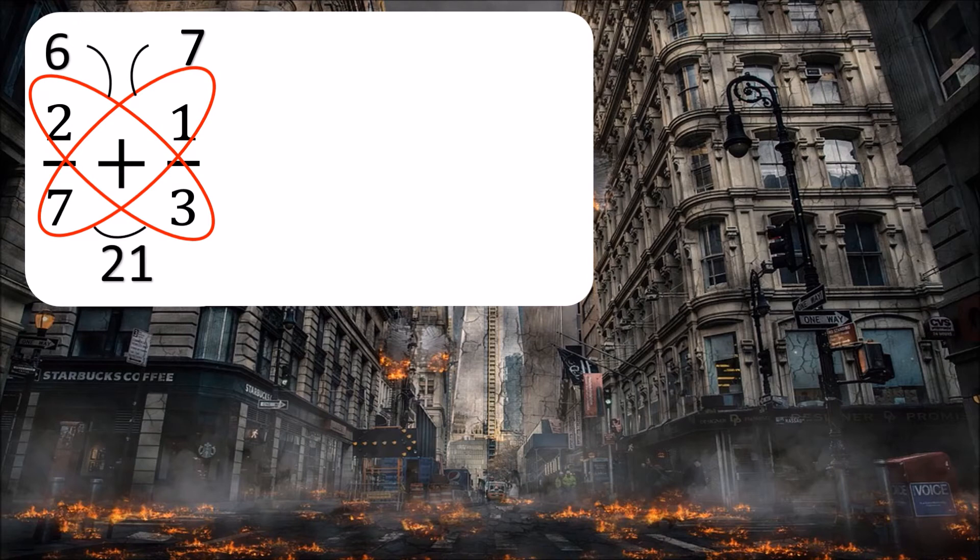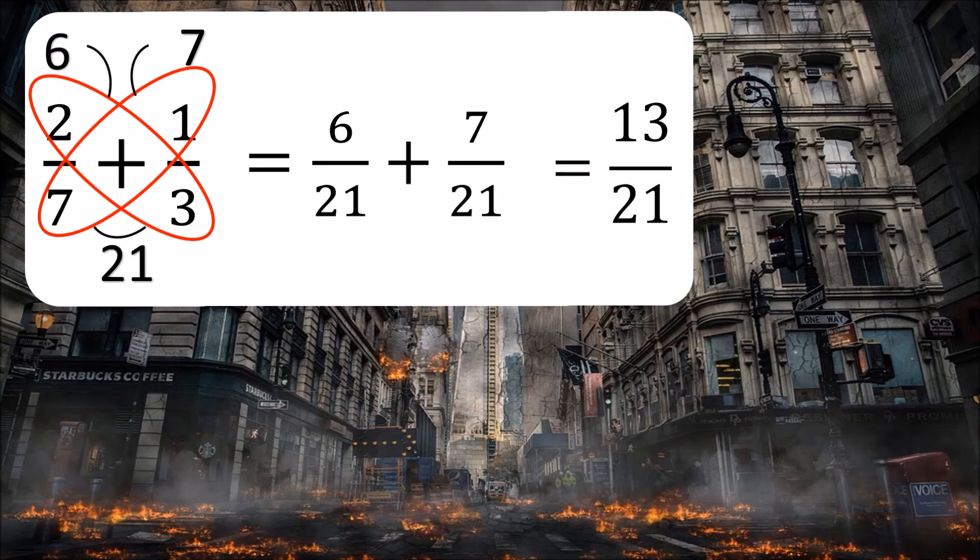So now again, we have two new fractions. We have six twenty-firsts and seven twenty-firsts. And six twenty-firsts and seven twenty-firsts is what we're going to add together. Now, again, because we're adding, we know that the denominator will stay the same. And we know that six plus seven equals thirteen. So the answer to six twenty-firsts and seven twenty-firsts is thirteen twenty-firsts.